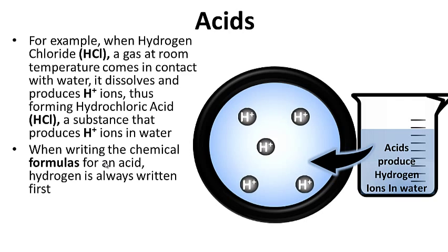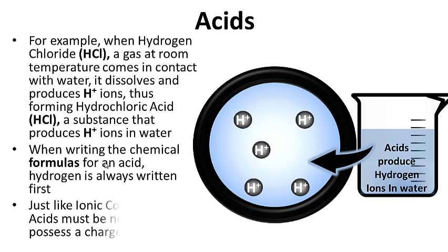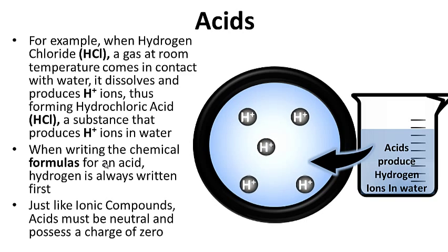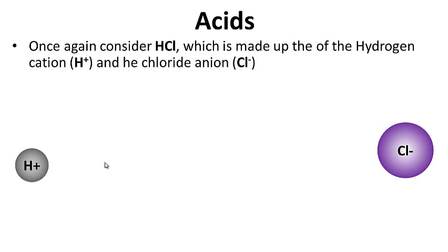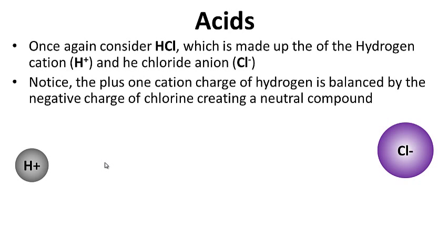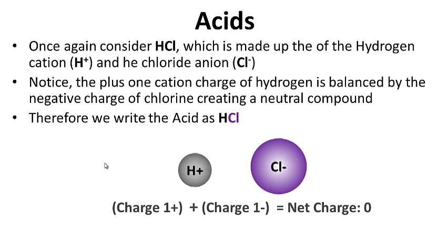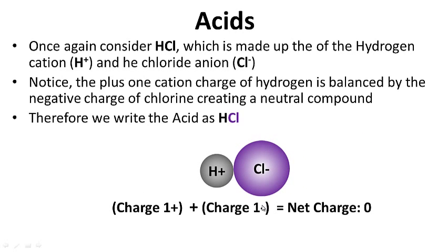When writing the chemical formulas for an acid, hydrogen is always written first. Just like ionic compounds, acids must be neutral and possess a charge of zero. For example, hydrochloric acid is made up of the hydrogen cation and the chloride anion. The plus one cation charge of hydrogen is balanced by the negative charge of chlorine, creating a neutral compound — charge of plus one, minus one, net charge of zero. We write HCl: hydrogen written first, anion second.